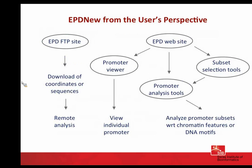From the user's perspective, there is an FTP site where you can download the coordinates of the TSS positions and surrounding sequences, and then do remote analysis with your preferred software. Or you can use the web server, look at individual promoters via the promoter viewer, or analyze promoters with the accessory tools — either analyzing the entire collection, for instance looking at histone marks, or selecting a subset, for instance promoters that have a bivalent chromatin structure in embryonic stem cells, and then looking for sequence motifs.